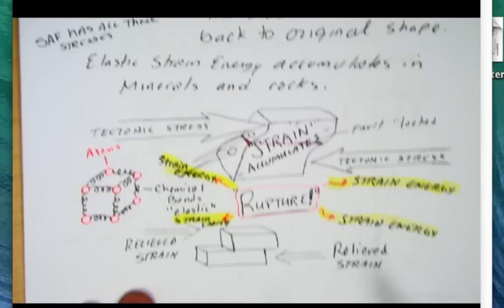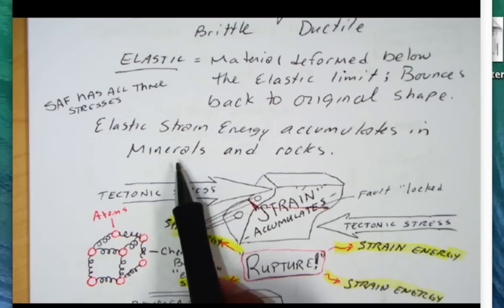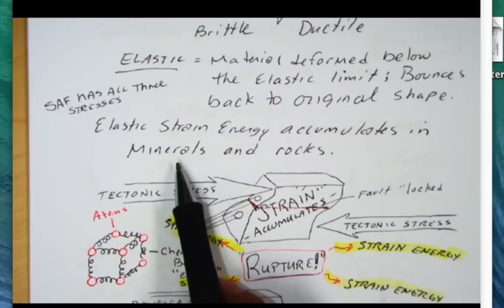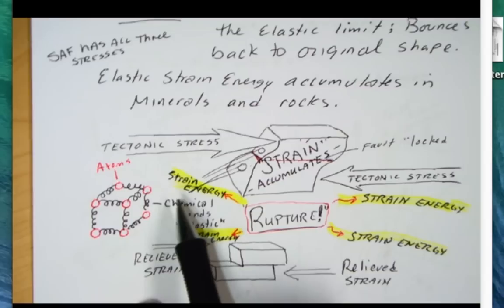One of the questions I have is where does the elastic strain accumulate? It accumulates in the minerals and in the rocks along the tectonic fault plane there.